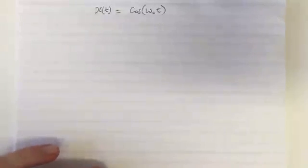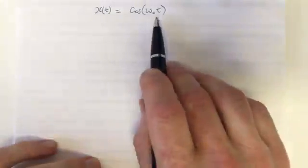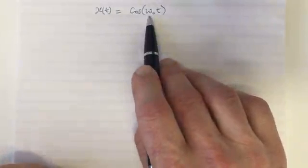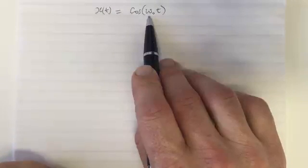I'm going to discuss the Fourier transform of the function cos(ω₀t). A couple of things to point out: t is the time variable and ω₀ is a constant representing the frequency of the cosine wave.